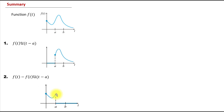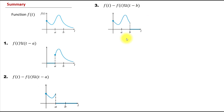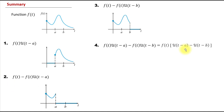Example 4 is interesting. We have f(t) multiplied by the unit step function at a, minus f(t) times the unit step function at b. To better understand, let's do some algebra. I notice there is f of t in both terms, so I can factor f of t out. Now f of t is being multiplied by this piecewise defined function consisting of a difference of two unit step functions: u(t-a) minus u(t-b).